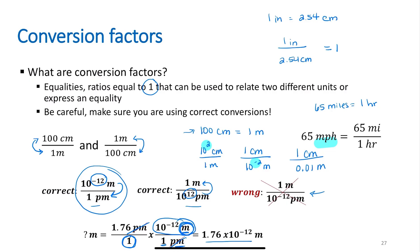The other way to write this: starting with 1.76 picometers, if you prefer larger-looking numbers, you could write the conversion as 1 meter per 10¹² picometers. You'll get the exact same answer — 1.76 × 10⁻¹² meters. Pick whichever form makes most sense to your brain.